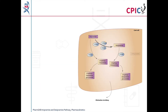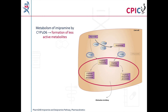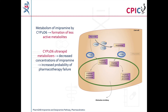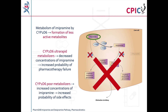Imipramine is metabolized by CYP2D6 to form less active metabolites. In CYP2D6 ultra-rapid metabolizers, metabolism of imipramine is increased, which reduces the concentrations of imipramine in the body and increases the probability of pharmacotherapy failure. In CYP2D6 poor metabolizers, metabolism of imipramine is reduced, which increases the concentrations of imipramine in the body and increases the probability of side effects.